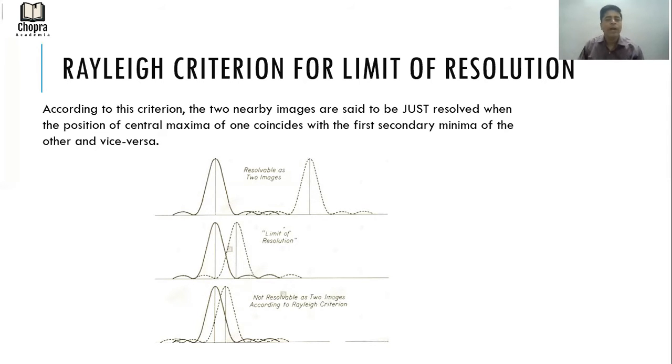According to the criterion, which is the Rayleigh criterion, the two nearby images or wavelengths are said to be just resolved when the position of central maxima of one image coincides with the first secondary minima of the other and vice versa.